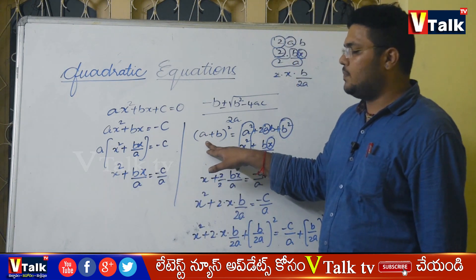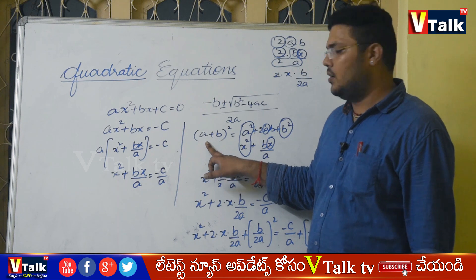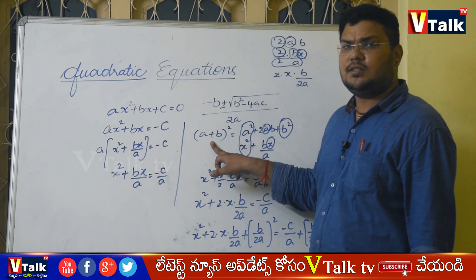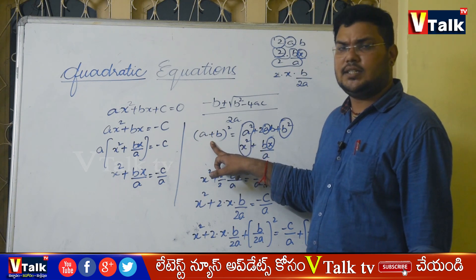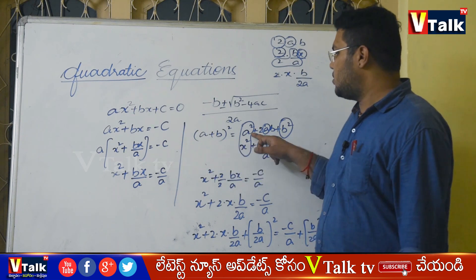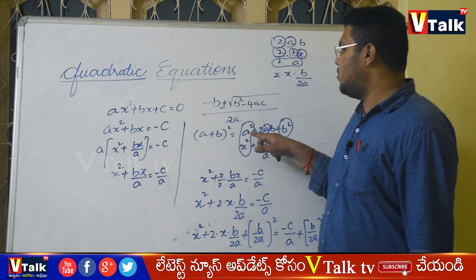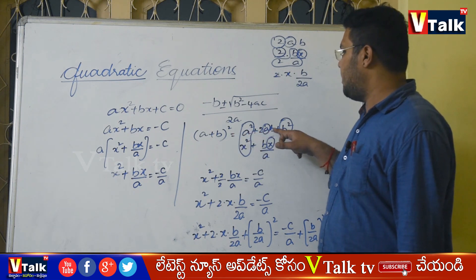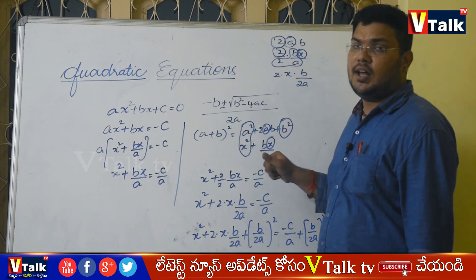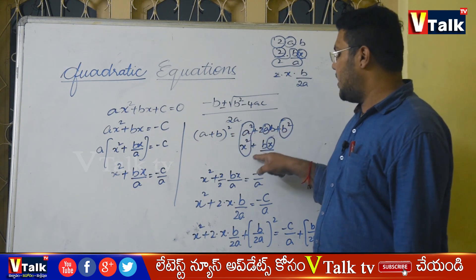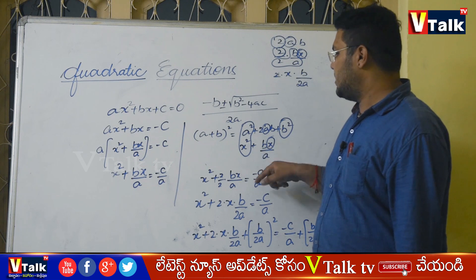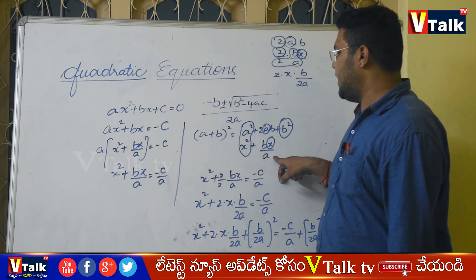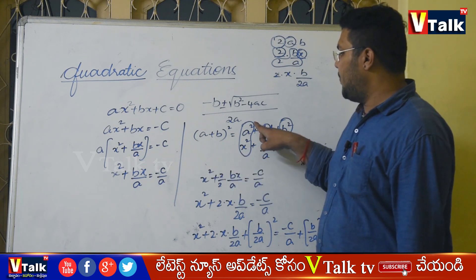If there is a plus sign, we compare with a plus b whole square; if minus, we compare with a minus b. So, a plus b whole square equals a squared plus 2ab plus b squared. Here, writing x squared plus bx by a, and comparing.